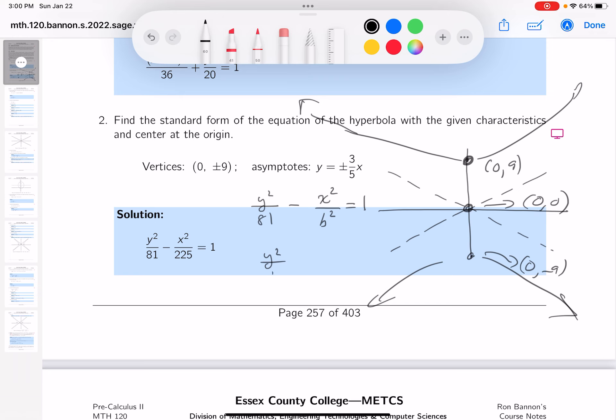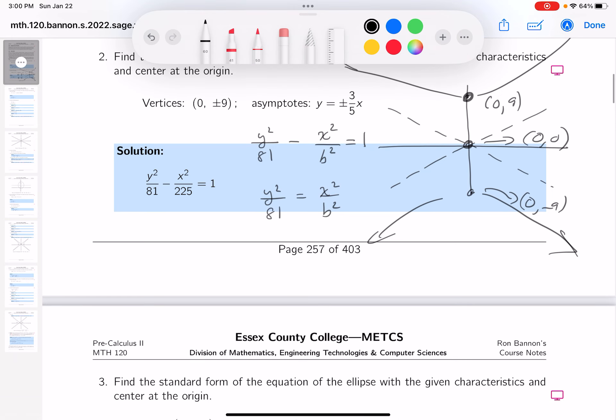So you can get y squared over 81 equals x squared over b squared. And let's just solve it for y. What do you get? You get y squared is equal to 81 over b squared x squared. I'll take the square root - y equals, this would be 9 over b times x.